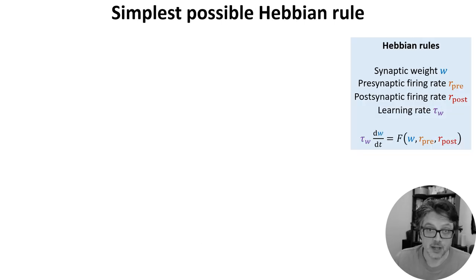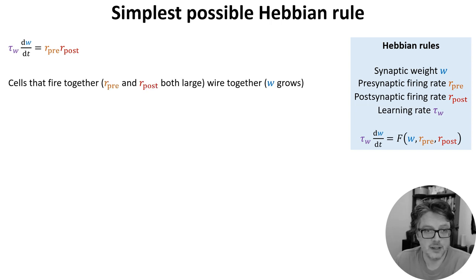That's all quite abstract, so let's take a look at a concrete example. We're going to choose the function f to be the product of the pre and the postsynaptic firing rates so that w just grows in proportion to the correlation between the firing rates. This clearly satisfies the idea of cells that fire together wire together. The weight grows at the fastest rate when both pre and post synaptic firing rates are high simultaneously.